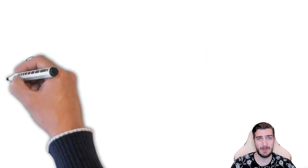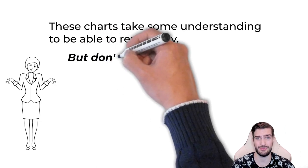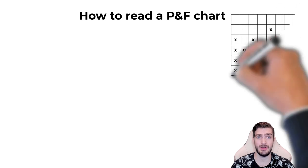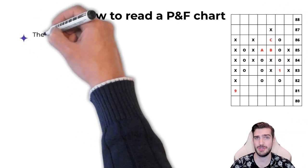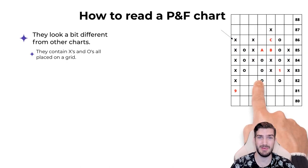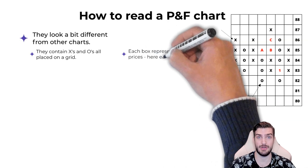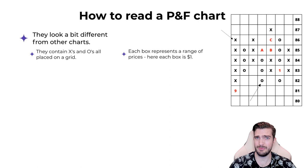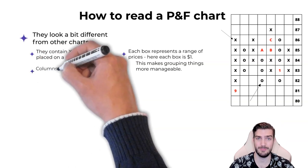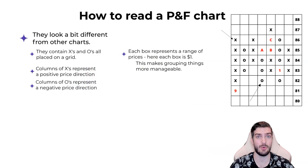One of the biggest challenges, and probably the reason you haven't heard of point and figure before, is that it takes a little bit of knowledge to be able to read these charts. The first thing you'll notice is that it looks different from stock charts you might be familiar with — we have a lot of columns of X's and O's on a big grid. Each box in this grid represents a range of prices. Columns of X's represent an uptrend or positive price direction, whereas columns of O's represent a downward trend or negative price direction.